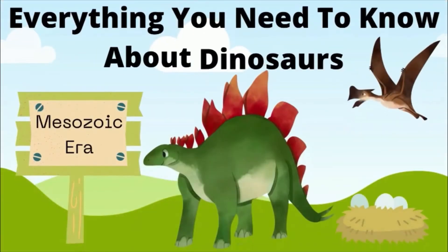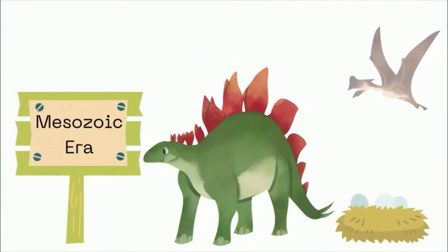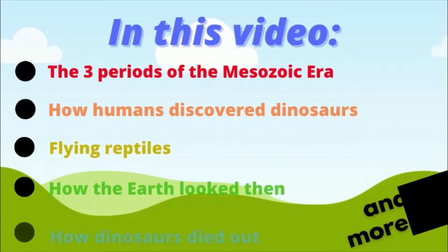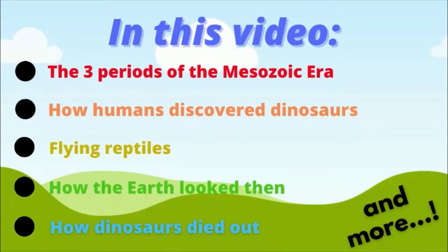Everything you need to know about dinosaurs. In this video: the three periods of the Mesozoic era, how humans discovered dinosaurs, flying reptiles, how the Earth looked like then, how dinosaurs died out, and more.